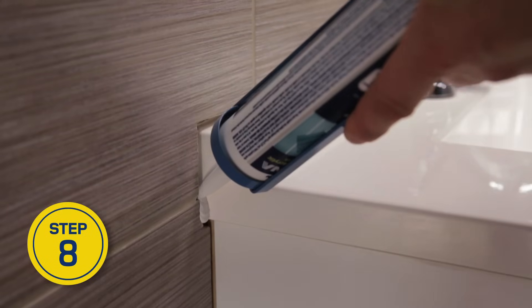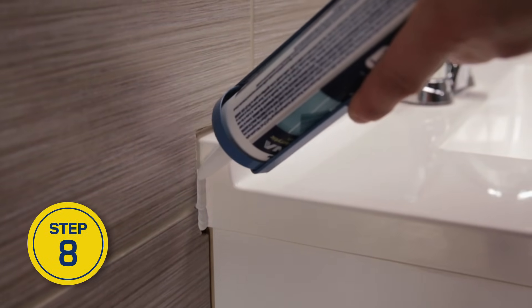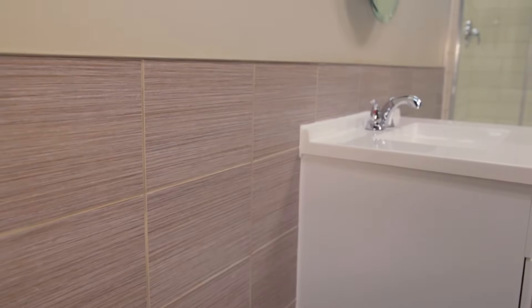Finally, after about 10 days, caulk the expansion joints with silicone sealer. For more advice on tiling, visit rona.ca.